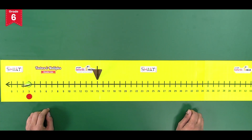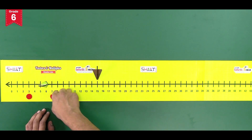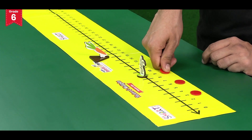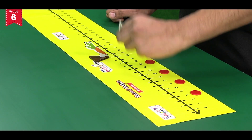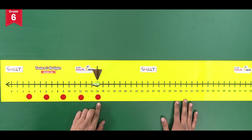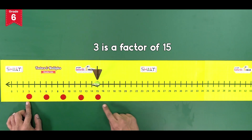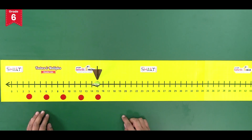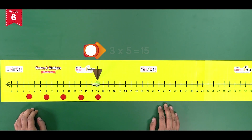Move the bunny again by taking a leap of 3 numbers. The bunny lands at 6, then at 9, then at 12, and finally at 15. The bunny lands at the number 15 where the carrot is placed by making leaps of 3 numbers at a time. This means that 3 is a factor of the number 15. As there are 5 tokens placed between 0 and 15, this means 3 multiplied by 5 is equal to 15.